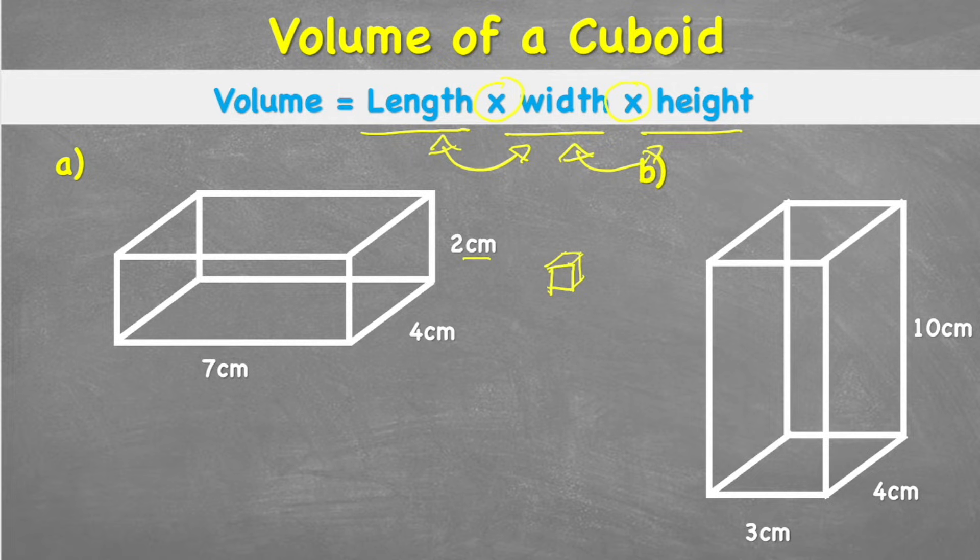So because in this case we're working with centimetres, this little cube that I've just built will be one centimetre in length, width, and height. And we will just stack these cubes on top of each other until we get a total amount. But fortunately we also have the formula of just length times width times height. Because essentially what length times width does is find us the area of one of the faces, and then if we times it by the height, we will get that third dimension as well.